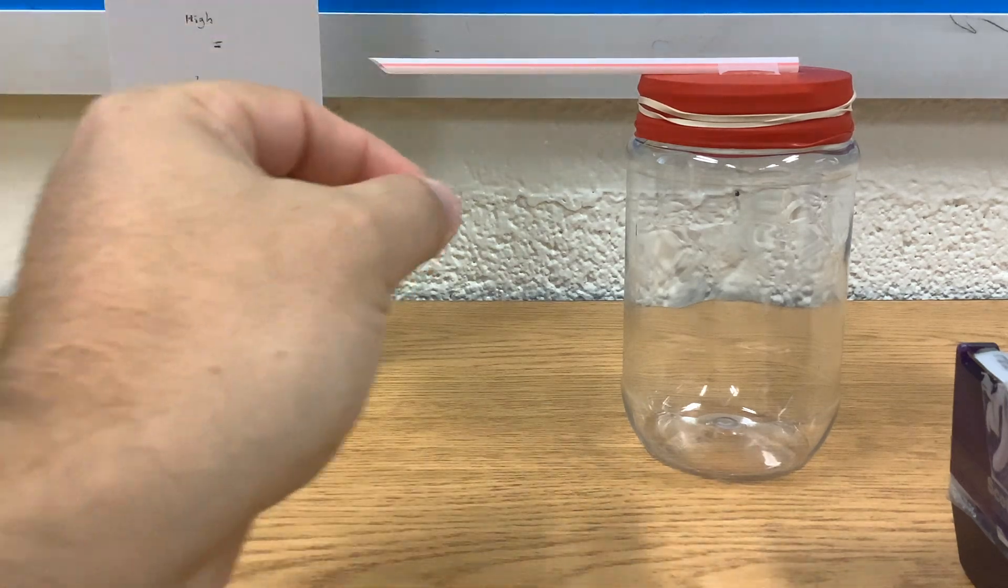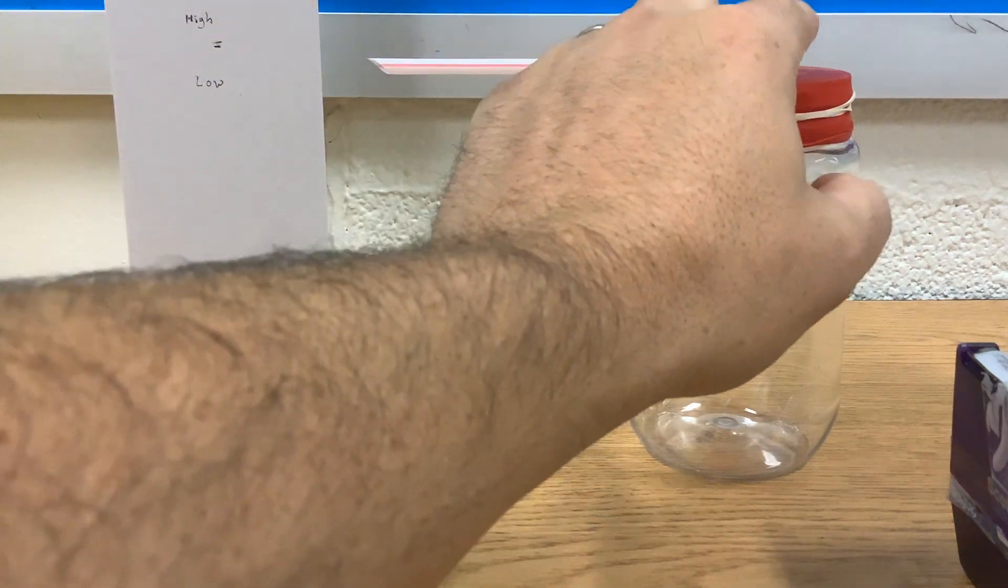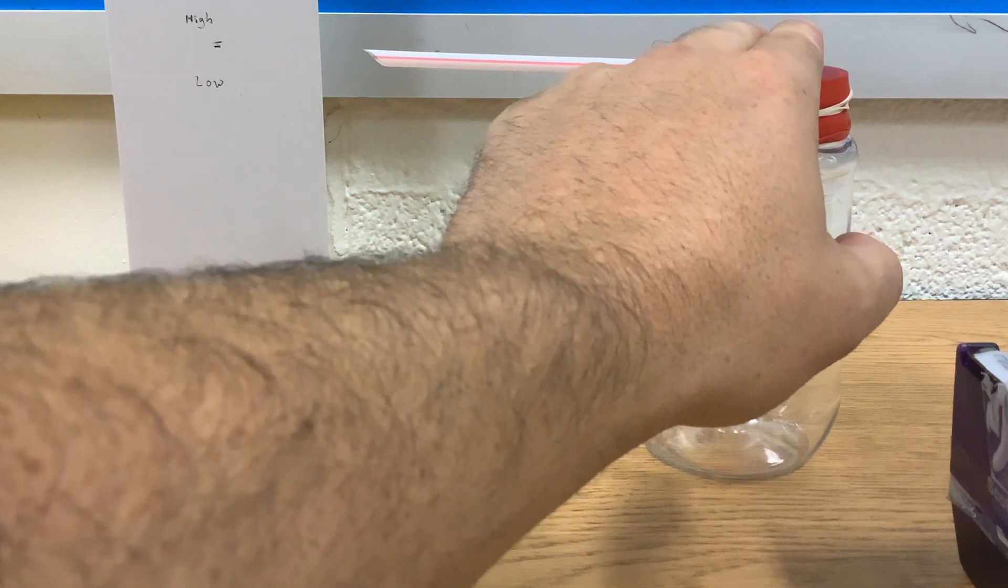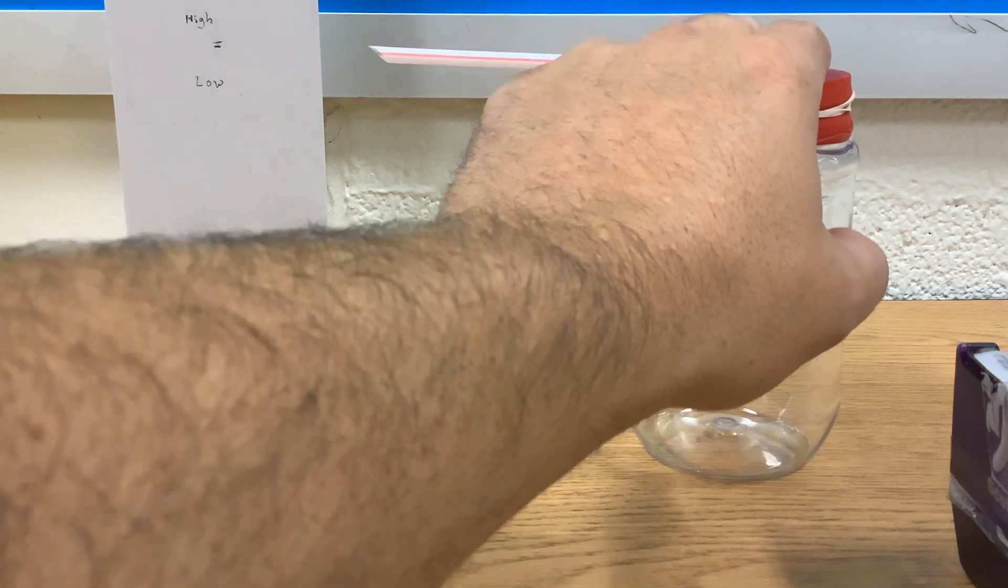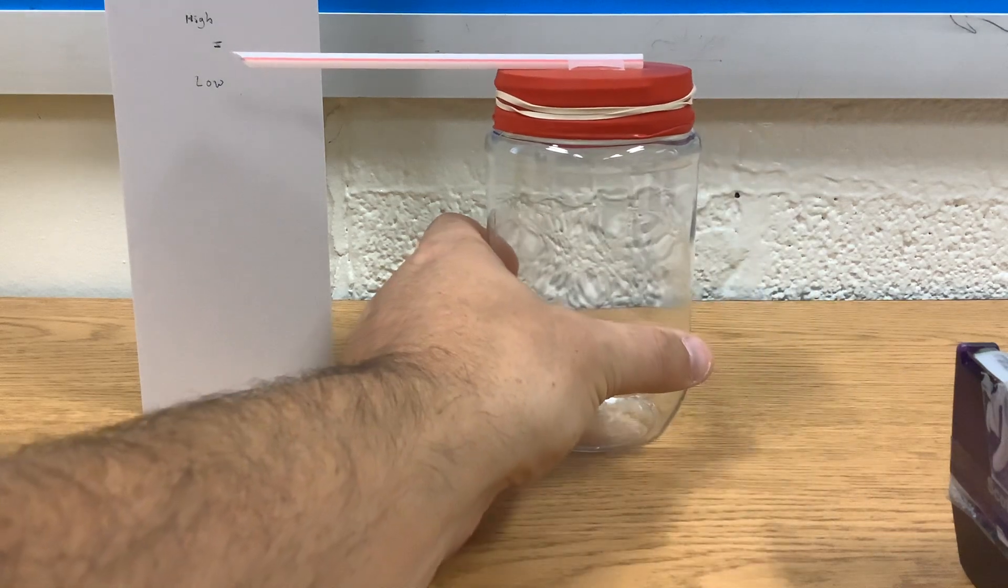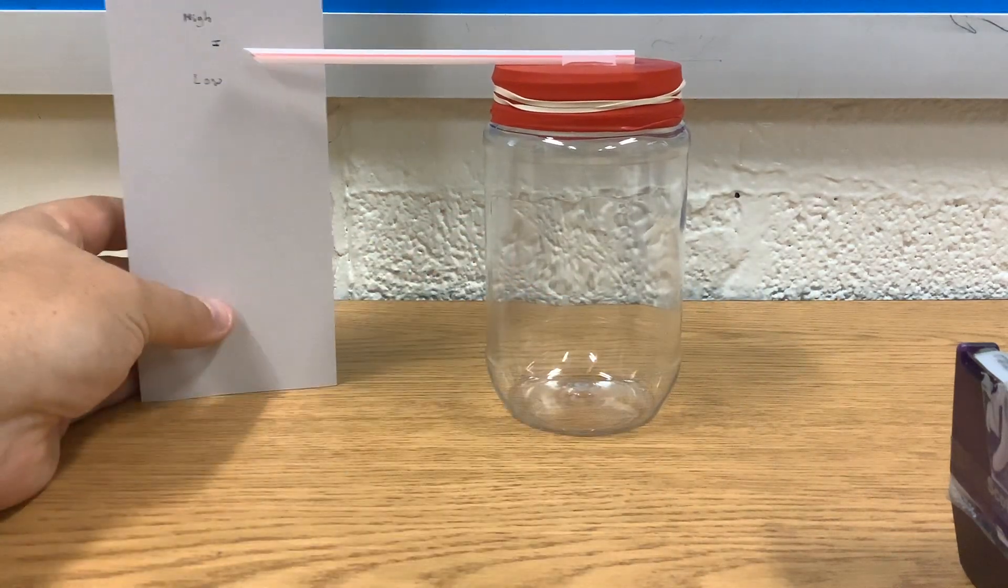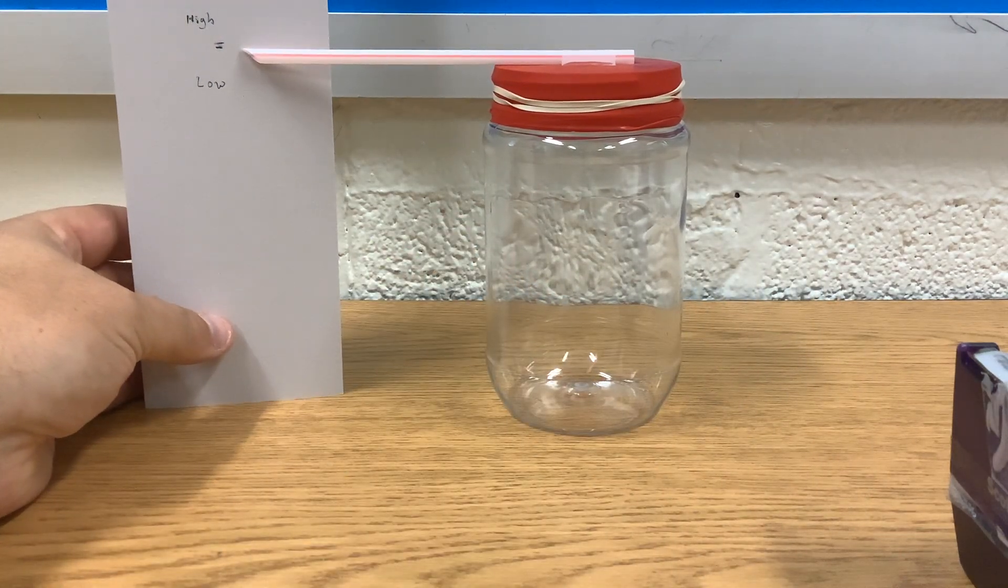So when we have a high pressure, we're going to see our jar move down. So we're going to have a bulge. And then the opposite is going to happen for low pressure.